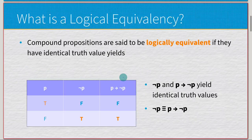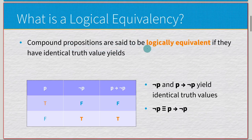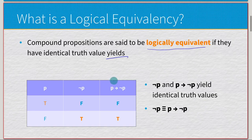So, just logical equivalency — what is it? Compound propositions are said to be logically equivalent if they have identical truth value yields. Specifically, the 'yields' part indicates that the results of the different expressions need to have identical values.